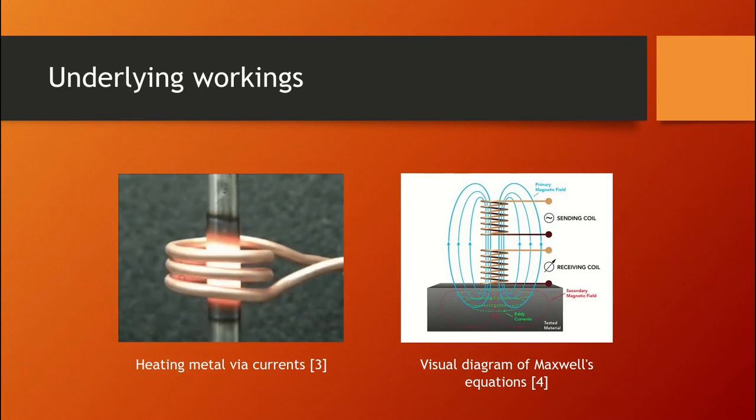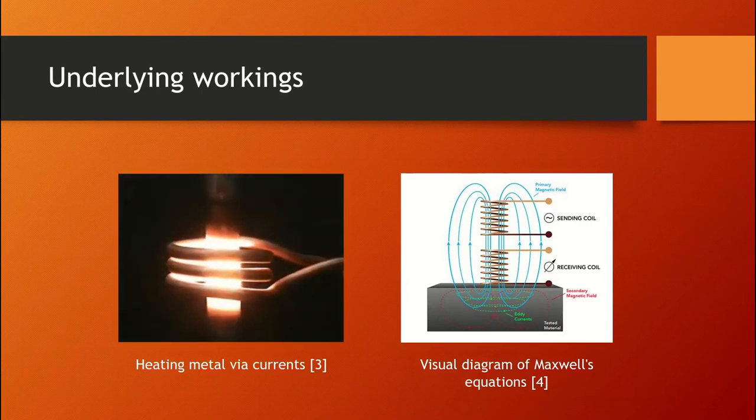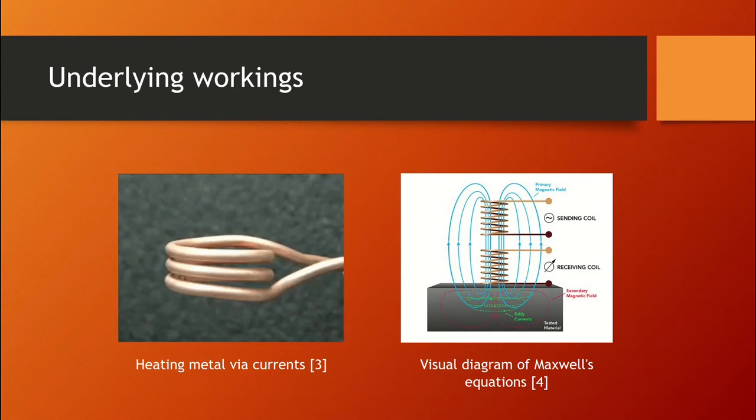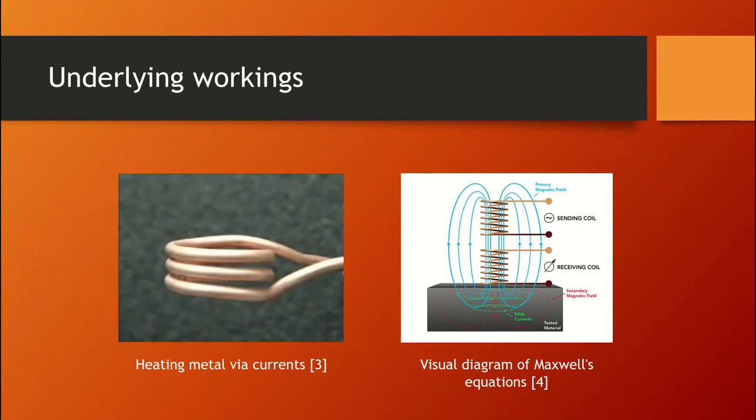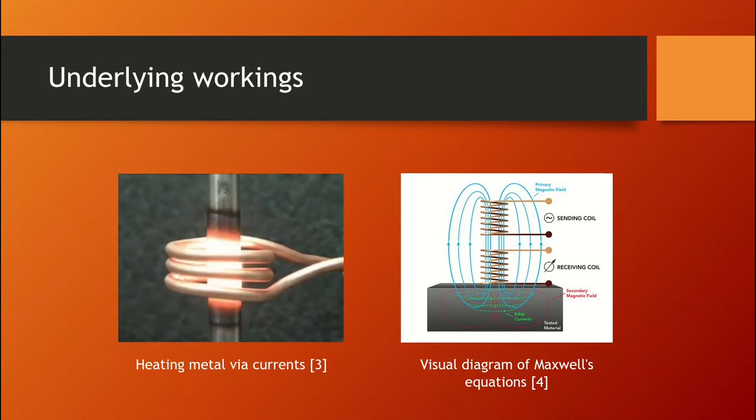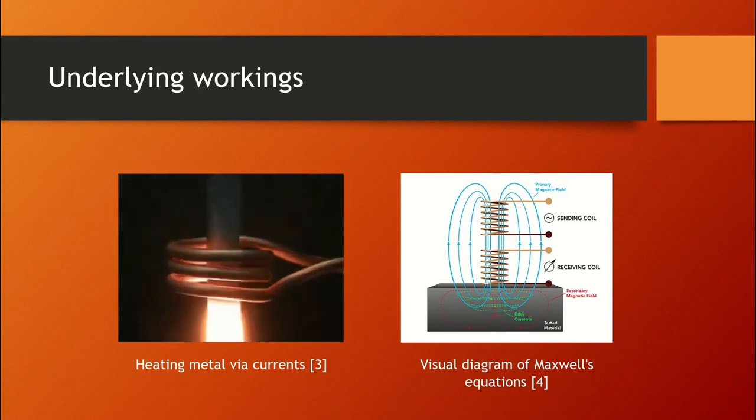To understand what an eddy current is, we must first understand the electromagnetic properties that govern this phenomenon. If you look at the figure on the right, you will be able to follow along visually with the explanation. When there is a changing magnetic field, or a change to the magnetic flux density, an electric field is generated in response. This field is created in space and contours the magnetic field.